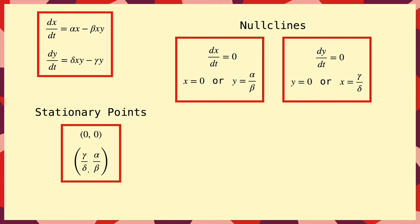So, now we have our two stationary points, we want to know how the trajectories behave around them. In particular, are they stable, do they attract trajectories towards them, or are they unstable and the trajectories move away?